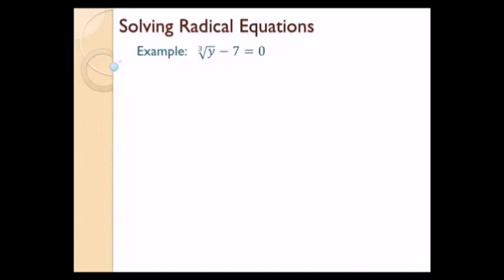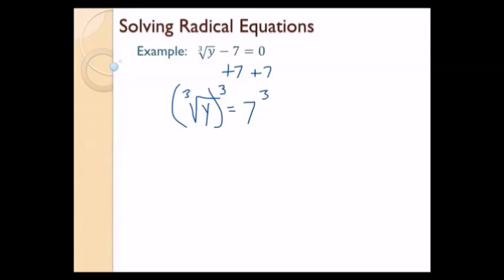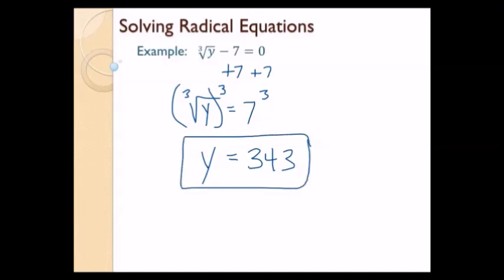Let's solve the equation: the cube root of y minus 7 equals 0. First step, isolate the radical — so I'm going to add 7 to both sides. So I have the cube root of y equals 7. Now, in order to solve this one, I'm not going to square it because the index is a 3. So instead of squaring it, I'm going to cube both sides. When I cube a cube root, just like when I square a square root, I just get rid of the radical, so I'm just left with y equals 7 cubed, which is 343. There's actually no further equation to solve — it's already solved. Let's plug it back in: cube root of 343 is 7, 7 minus 7 is 0. It works. There's my final answer.